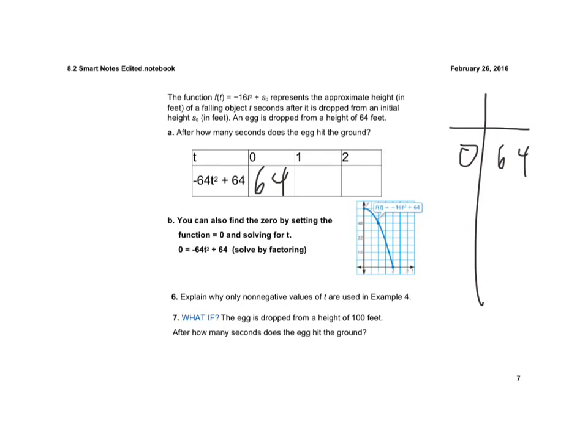Oh, I typed that in wrong, that should be -16, sorry about that. So 1 squared is 1, 1 times -16 is -16, -16 plus 64 would be 48.